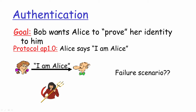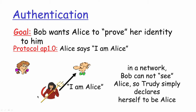Coming to authentication: as we discussed in the previous module, what we essentially want to ensure is that the other person is really who they claim to be. In this example, Bob wants Alice to prove her identity to him. Very simply, Alice can say 'I am Alice.' But a failure scenario here is that Trudy can also get into the network and say 'I am Alice.' There is no way with this simple mechanism for Bob to really know that Trudy is actually sending the message trying to act as if she is Alice.